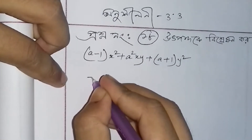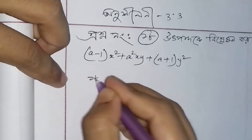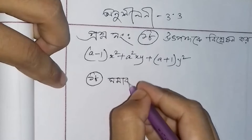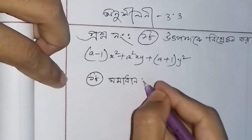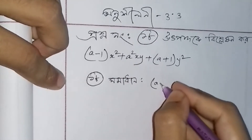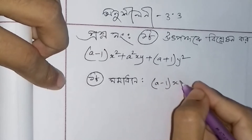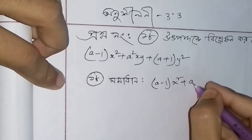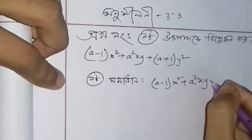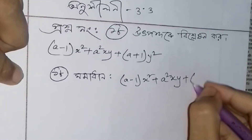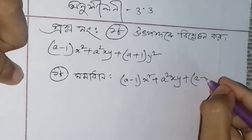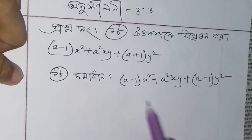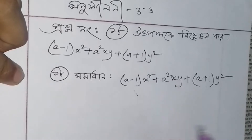Samadhan: (a minus 1) x square plus a square xy plus (a plus 1) y square. Toh amurah dhormu — ehi a minus 1 = p, abong a plus 1 = q.